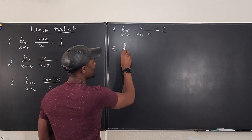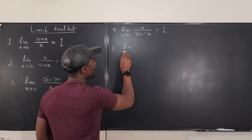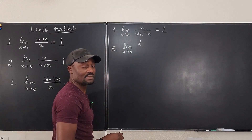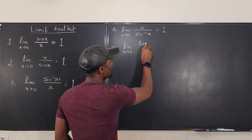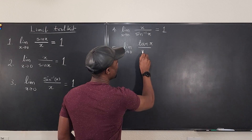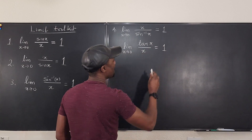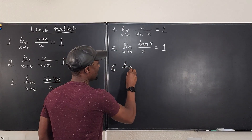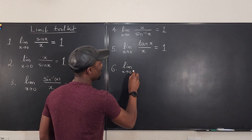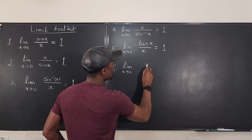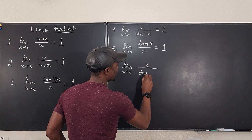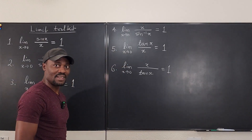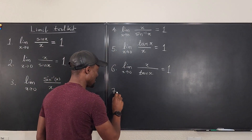So let's go to number five. Number five — we've used it before — is the limit as x goes to zero of tan x over x, which equals one. Similar to this, number six is the limit as x goes to zero of x over tan x, also equal to one. Lots of ones here.